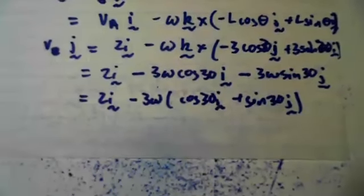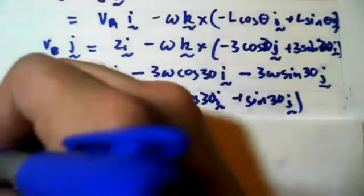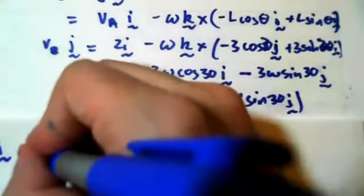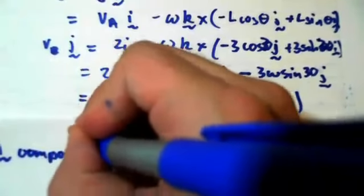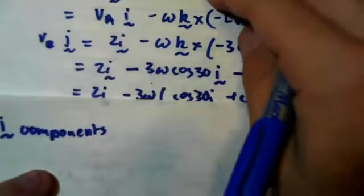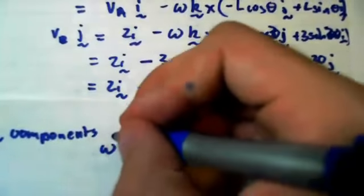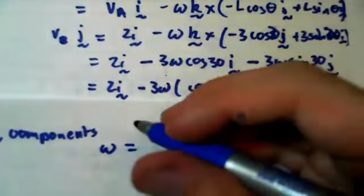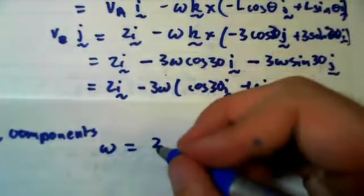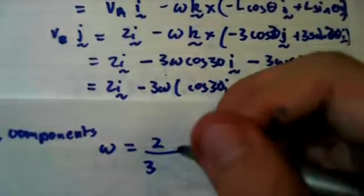So in the I direction, if we look at our components in the I direction, I'll do that on the next page. If we look in the I direction, their I components, omega equals 2 over 3 cosine 30.